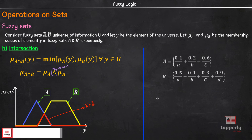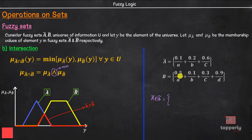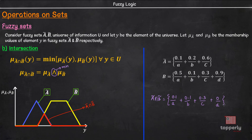Taking our same numerical example, A intersection B is given by the minimum of each pair: minimum of 0.1 and 0.5, which is 0.1/A; plus 0.1/B; plus 0.3/C; plus 0/D. So this is A intersection B.